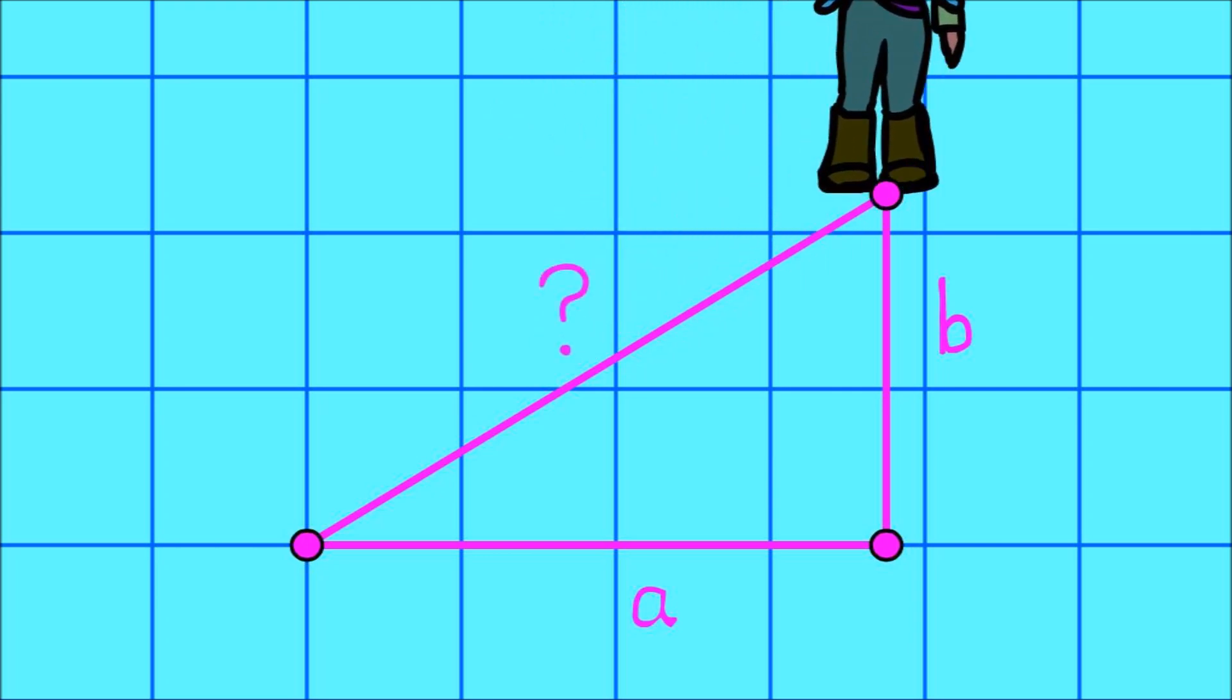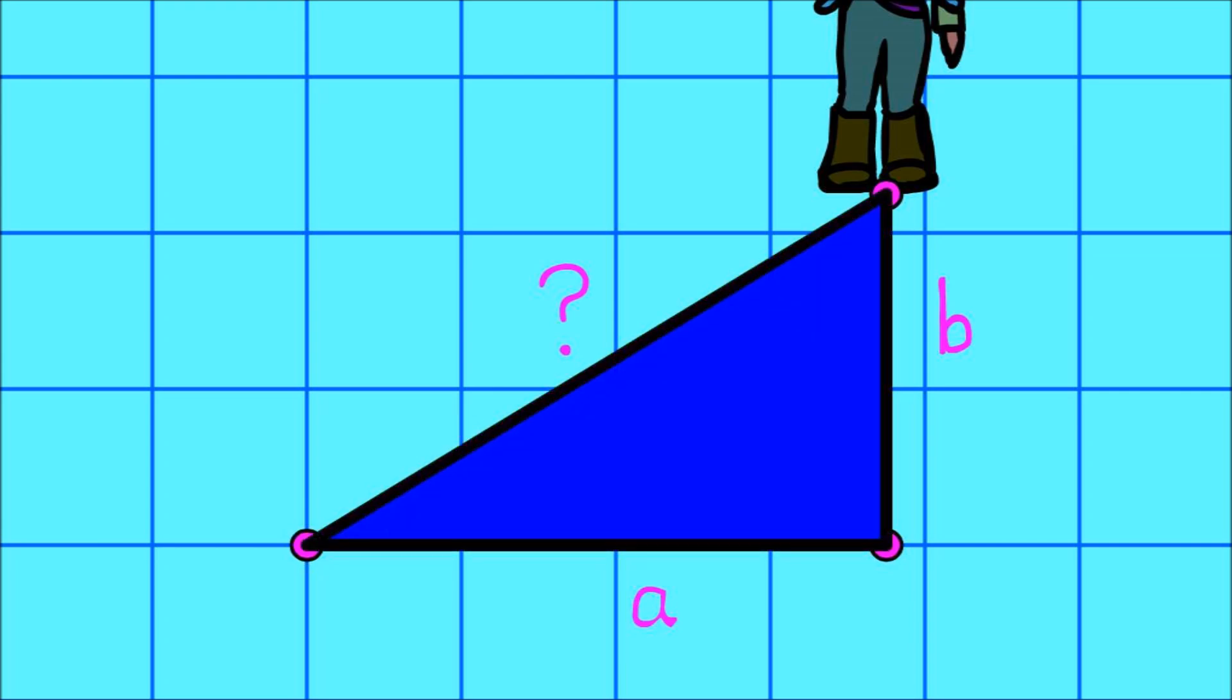We can picture her standing at the top of a ramp, A boxes long and B boxes high, with the bottom of the ramp right at her spawn point. In our flat video game universe, this ramp looks like a triangle.